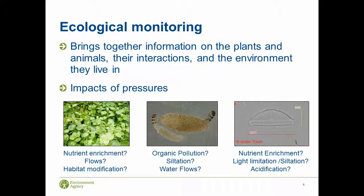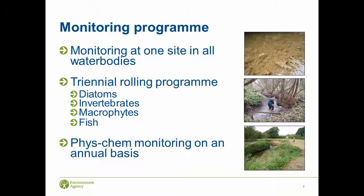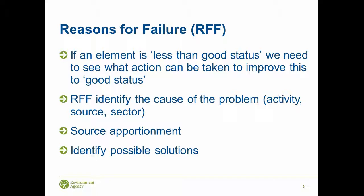We monitor all of these elements in every water body at at least one site, generally at the base of the watercourse, so it takes in all the information from all the pressures throughout. The biotic elements are monitored on a three-yearly cycle and the physico-chemical elements such as nutrients are monitored on an annual basis. The information we gain from these helps to fill in the reasons for failure database - it tells us why water bodies are failing and what action we can take to improve them to good status.